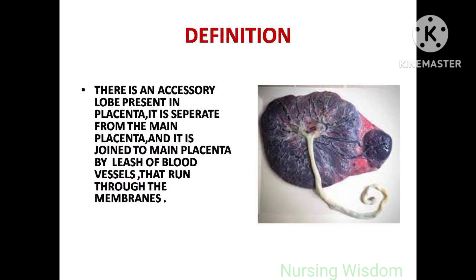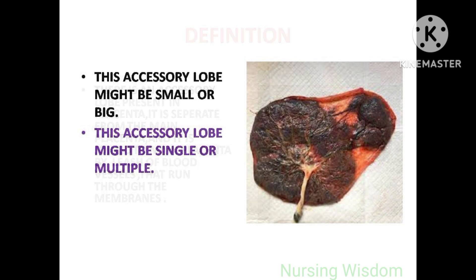Definition: Succenturiate placenta means there is an accessory lobe present in the placenta. It is separate from the main placenta and is joined to the main placenta by a leash of blood vessels that run through the membranes. This accessory lobe might be small or big, and single or multiple.